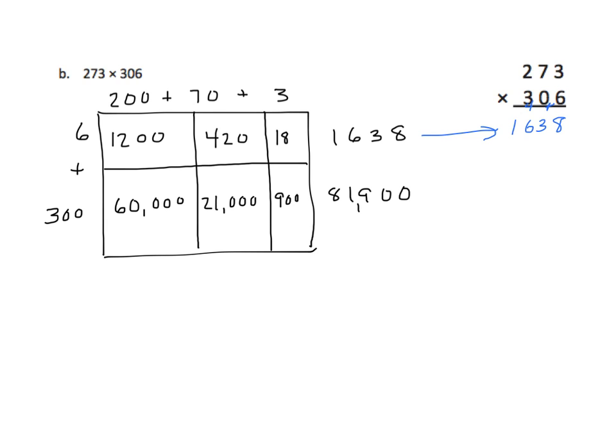We're not going to multiply by the tens place. Some people might want to write zeros across here, but that's a waste of time. The main thing to remember is that we are now multiplying from the hundreds place, so we need to place two zeros in our partial product. Let's begin. Three times three is nine — no regroup. Three times seven is twenty-one, regroup my two. And three times two is six, plus two is eight. And once again, we have a correspondence.